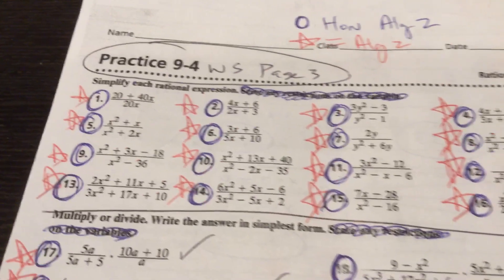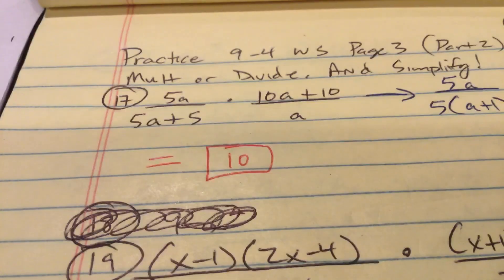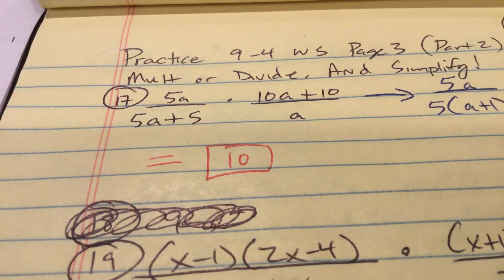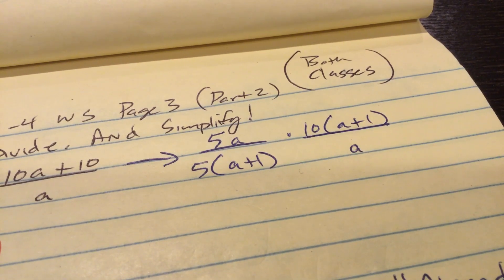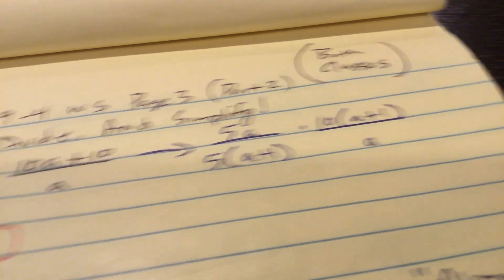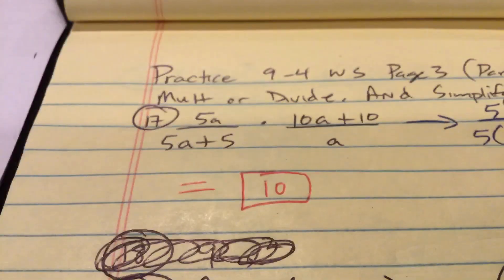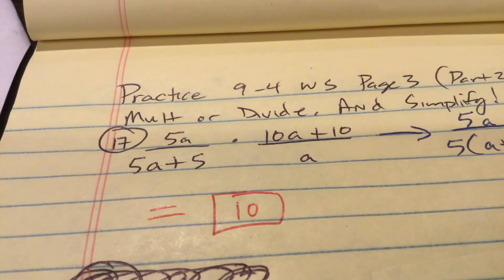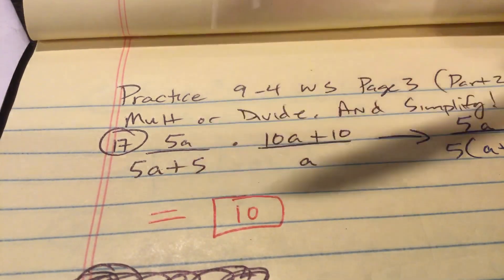Practice 9-4. I did the video over the first 16 earlier this week. Here's for the next 20 of them. Both classes are going to be doing the same questions. So number 17 here, here's the question. Multiply or divide and simplify. Those are the instructions for all of us. You have 5a over 5a plus 5 times 10a plus 10 divided by a. What you're going to do is you're going to factor out the 10 that these two have in common, factor out the 5 that these two have in common.